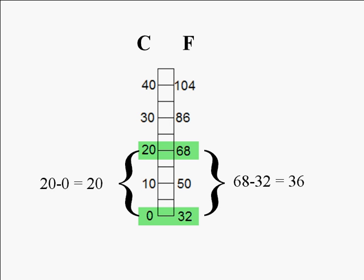To repeat, a reading of 20 degrees Celsius corresponds to a reading of 68 degrees Fahrenheit, but a change of 20 degrees Celsius corresponds to a change of 36 degrees Fahrenheit.